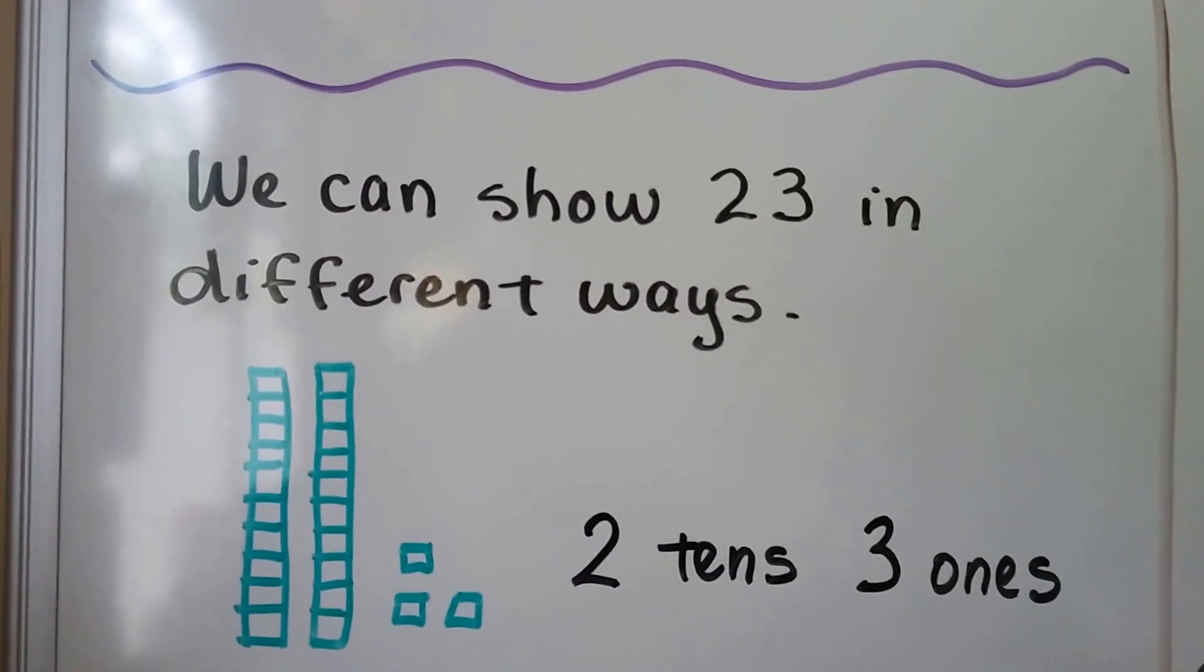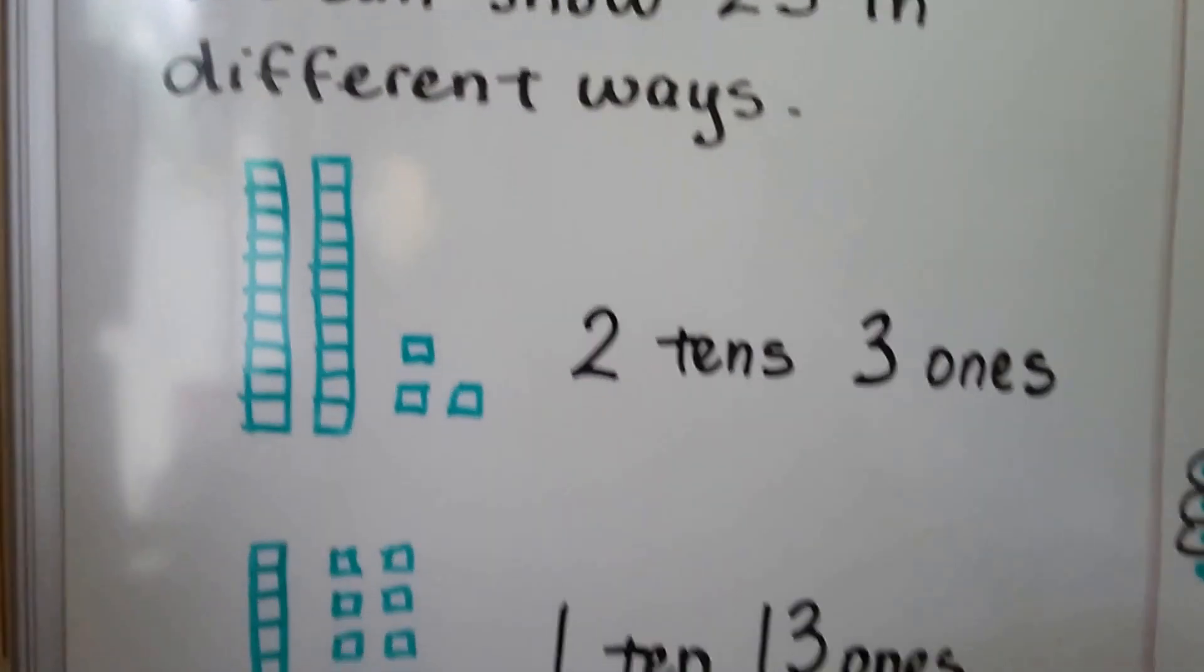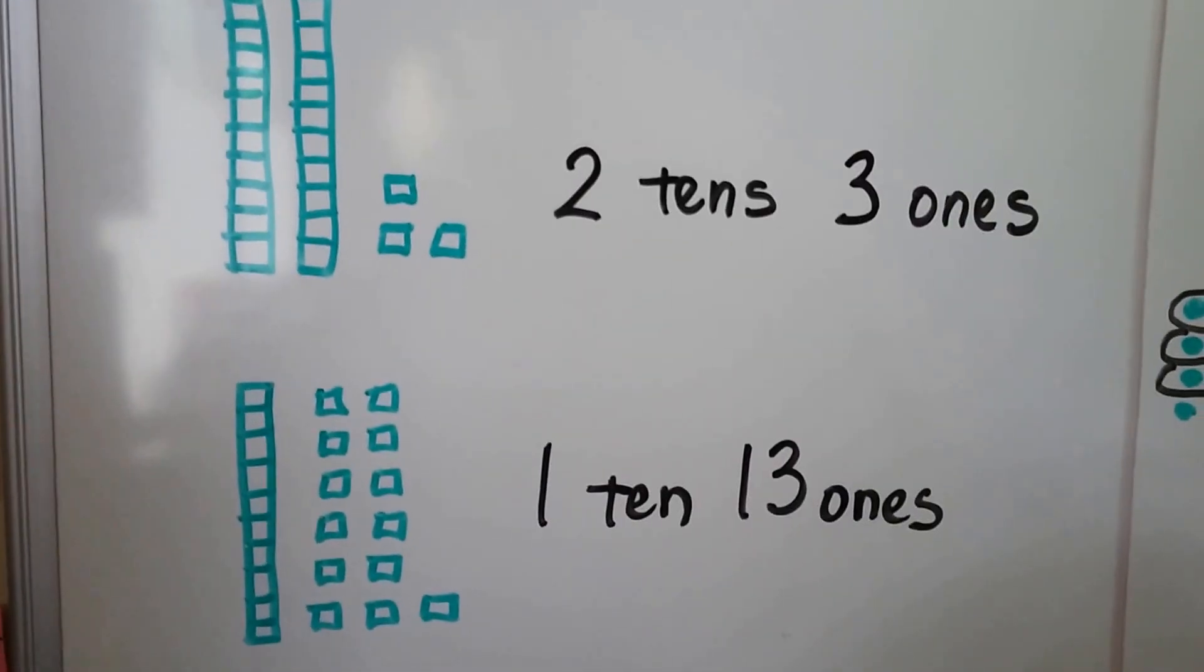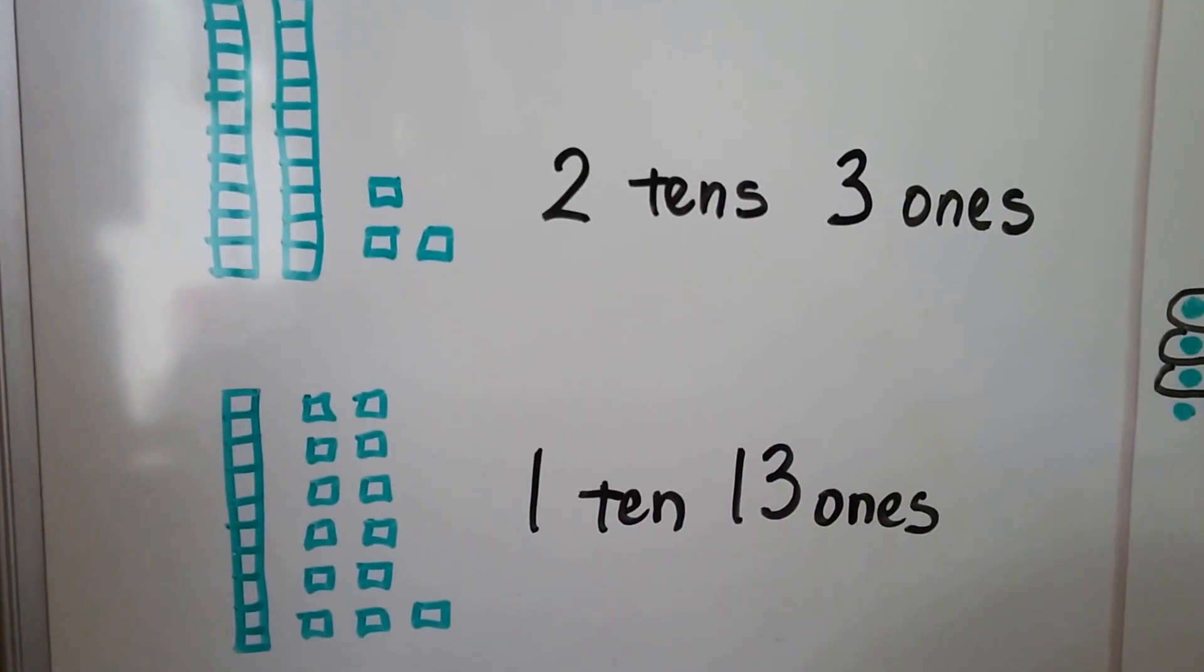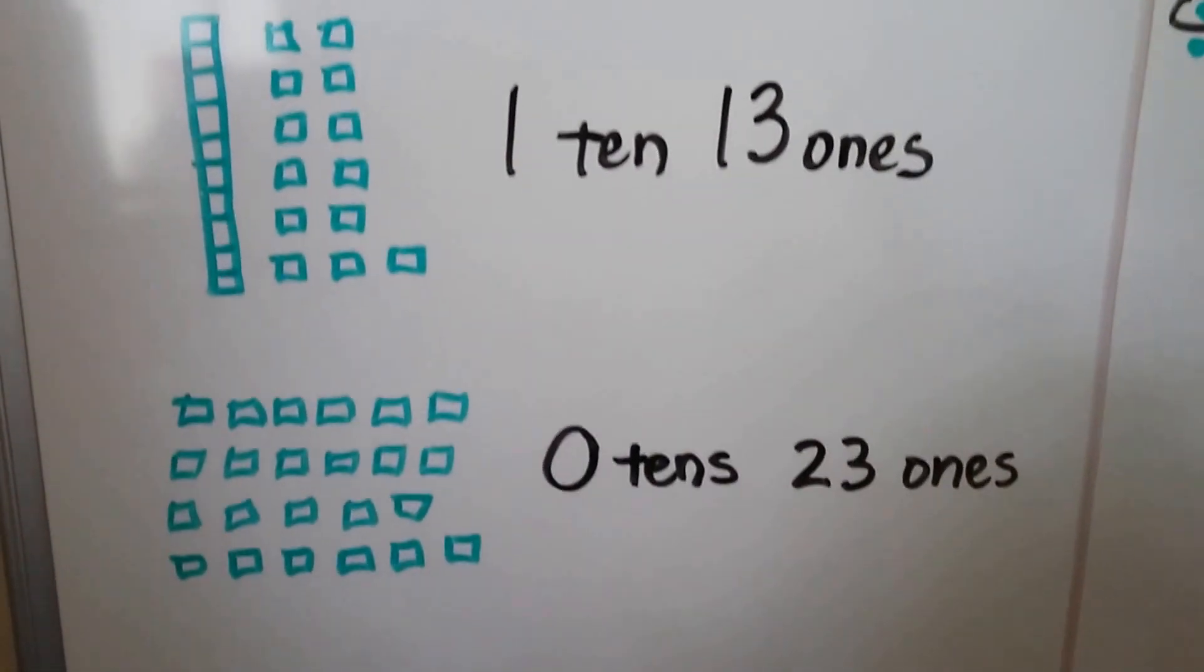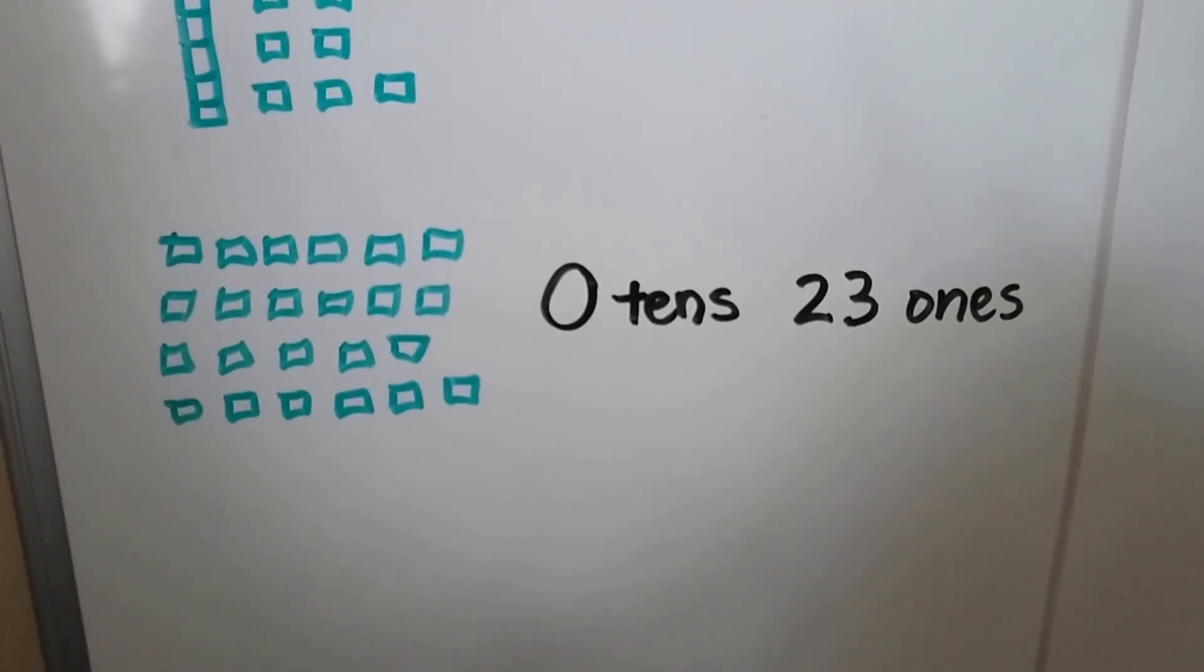We can show it as two tens and three ones. We can even show it as one ten and 13 ones. We can show it as zero tens and 23 ones.